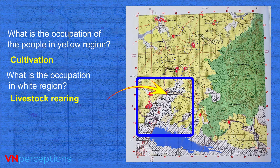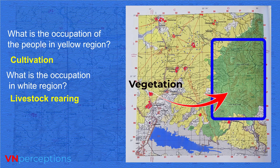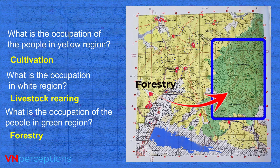The third color you see is green, and green refers to forest area — vegetation, meaning plant communities in these areas. Different types of forest are seen here, and the main occupation in this area is related to forest.